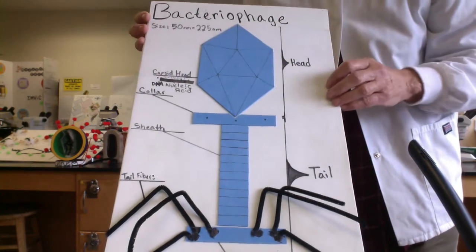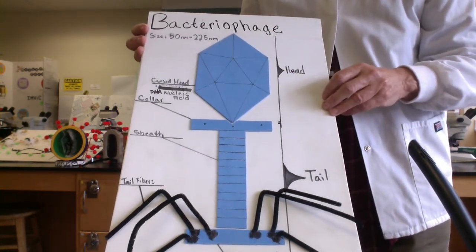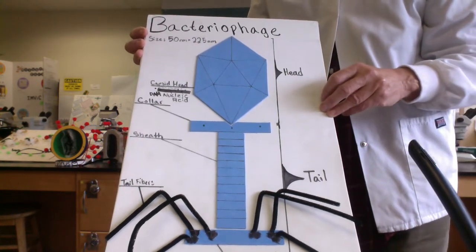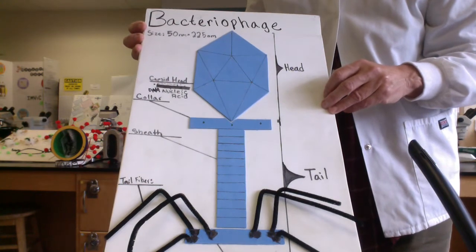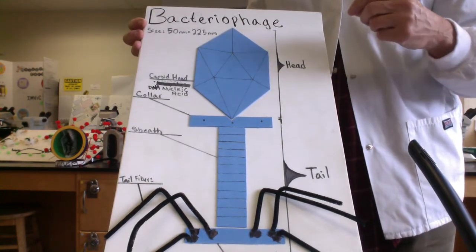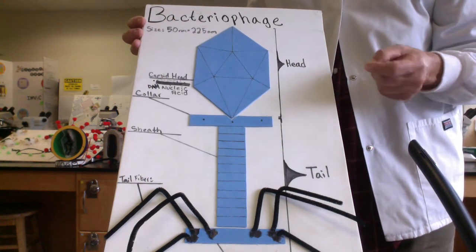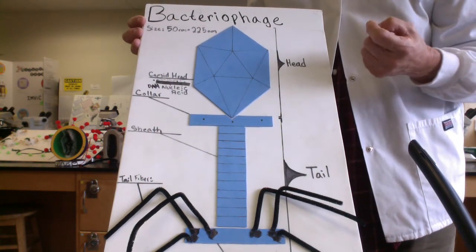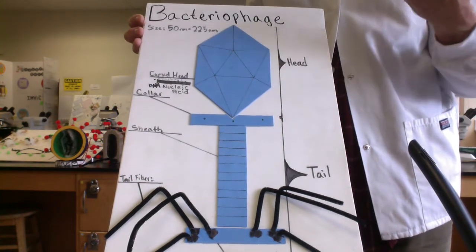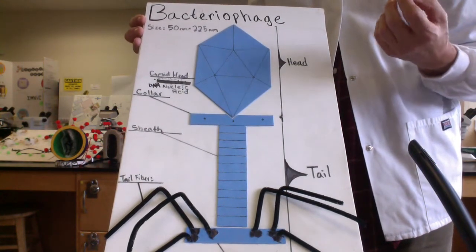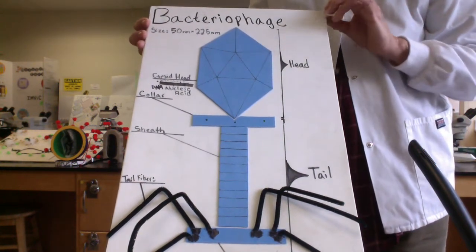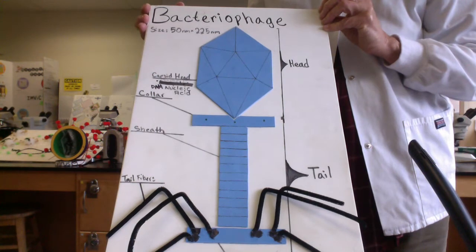Phage means to eat. Historically, when the activity of bacteriophages was observed, people thought something was eating the bacteria. Indeed, with some of our bacterial viruses, when they get into the bacteria, they can undergo a process called lytic replication. In lytic replication, they're going to make copies of their nucleic acid, copies of their proteins, and the result will be they're going to end up lysing and killing their bacterial host.